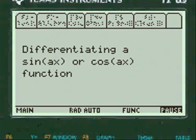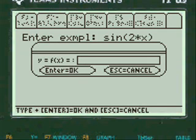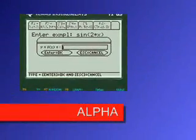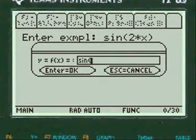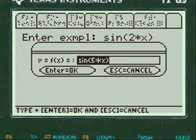You can do cosine or sine, and we're going to enter the function. You have to press alpha before you enter anything in my programs. And so we're going to do sine of 5 times x. Press enter.